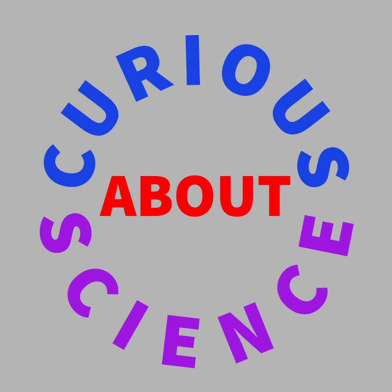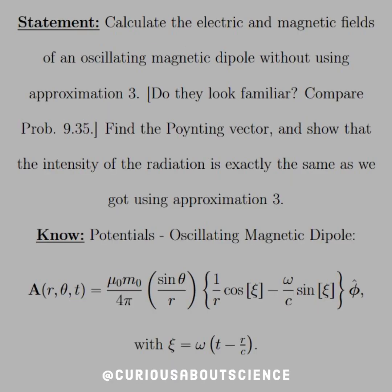All right, moving on. Now we get to see the twin correspondence to this electric dipole with now the magnetic dipole. So calculate the electric and magnetic fields of an oscillating magnetic dipole without using the approximation 3. Again, go reference the notes posted. Do they look familiar? Here, compare problem 9.35, and we want to find a pointing vector and show that the intensity of the radiation is exactly the same as we got using approximation 3.